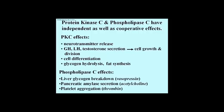Phospholipase C effects include the stimulation of the release of hormones that enhance liver glycogen breakdown, and the secretion of amylase by the pancreas to help digest intestinal carbohydrates. Phospholipase C also stimulates liver production of some blood clotting factors, like thrombin shown here.